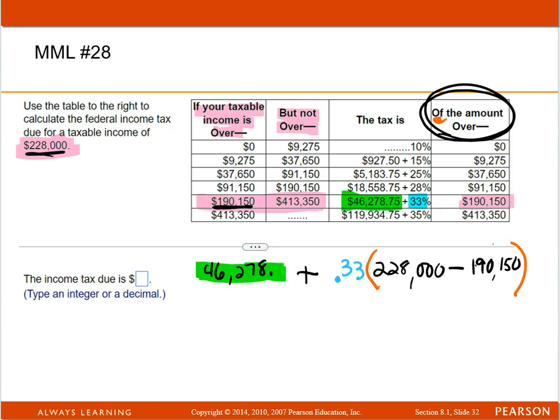$228,000, and when I subtract the $190,150, that makes it a difference. This subtraction is $37,850.